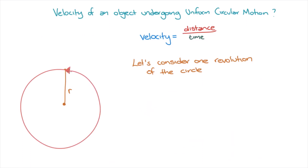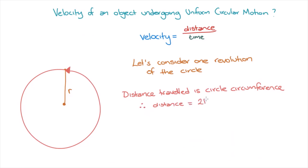We know that the distance the object has travelled is the circumference of the circle. The circumference of a circle is equal to 2π times the radius of the circle. So for an object undergoing one revolution of the circle, the distance is equal to 2πr.